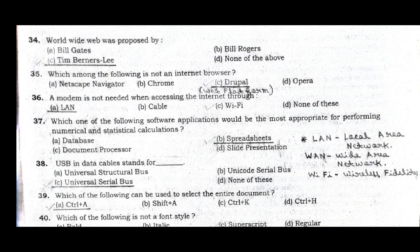Question 36: A modem is not needed when a device is accessing the internet via LAN — LAN means Local Area Network. For reference: LAN is Local Area Network, WAN is Wide Area Network, Wi-Fi is Wireless Fidelity. Question 37: Which software application is most appropriate for performing numerical and statistical calculations? Answer option B, Spreadsheets.